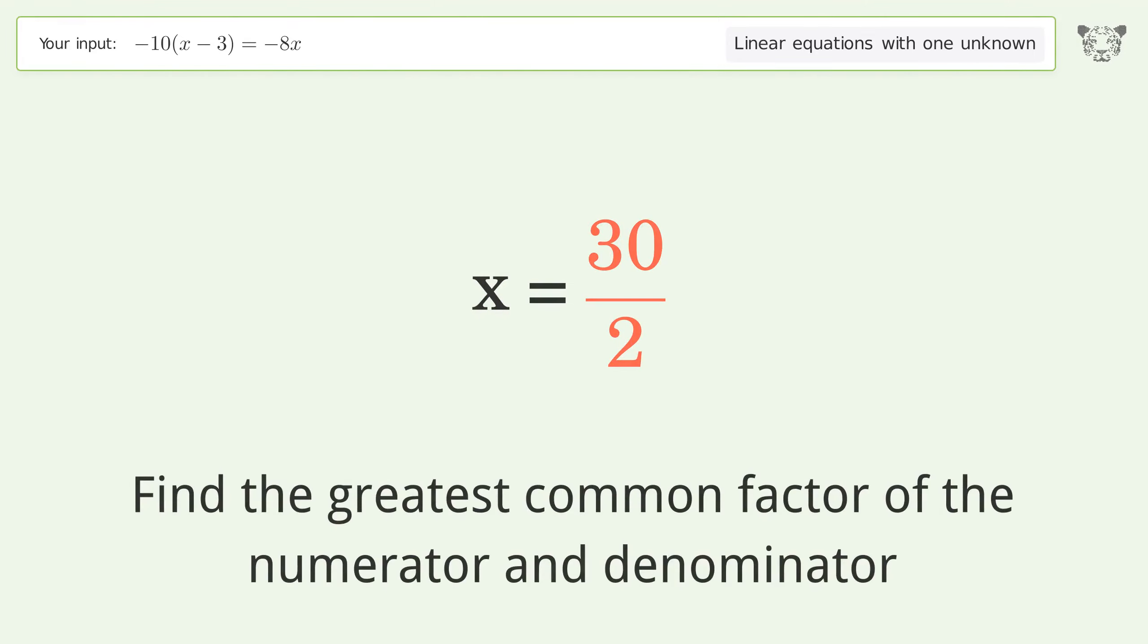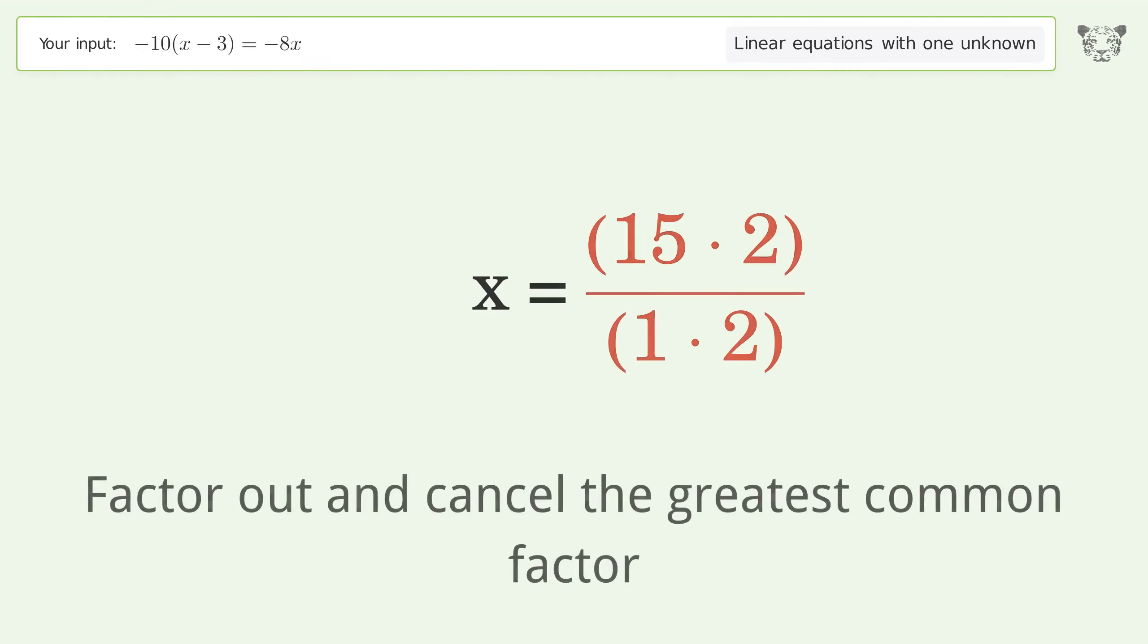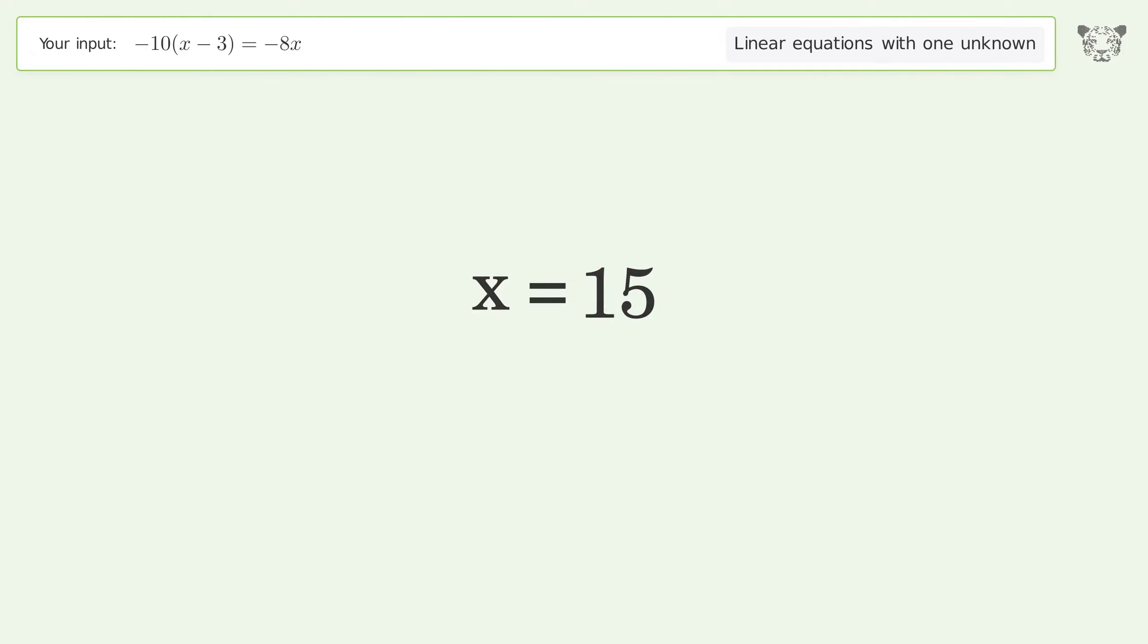Find the greatest common factor of the numerator and denominator. Factor out and cancel the greatest common factor. The final result is x equals 15.